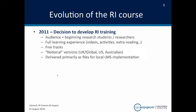The evolution of the research integrity course all started around 2010-2011 when Epigeum decided to move into this area. It was hearing more and more that there was a need for training on research integrity, and it decided to develop some courses. Our initial goal was to target beginning research students and beginning researchers. We wanted to provide a full learning experience, which included videos, interactive activities, and extra reading. It was very soon made clear to us that we needed different tracks, because not all research is the same. We also needed national versions, because the rules are different. We developed a UK/global one, a US one, and an Australian one. The early course was delivered primarily as files to put on a local LMS system.